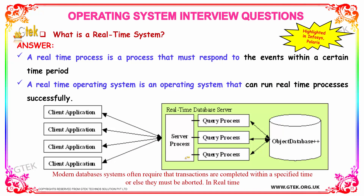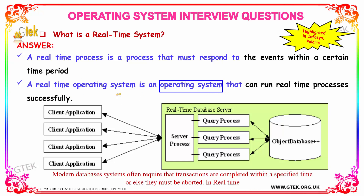What is a real-time system? A real-time process is a process that must respond to events within a certain time period. In a real-time operating system, an operating system that can run real-time processes will be successful.